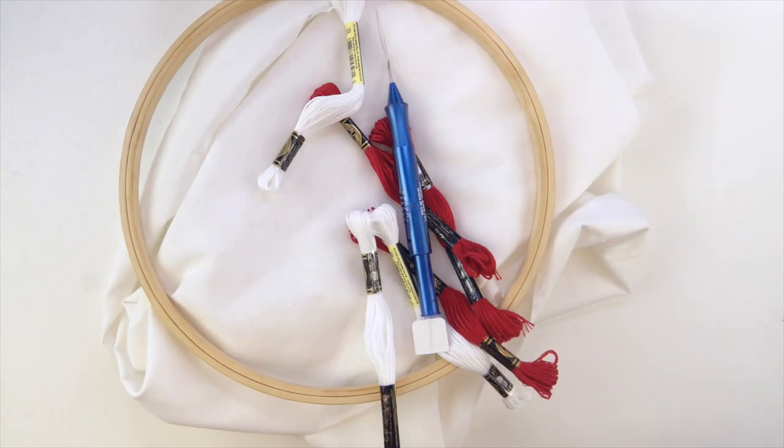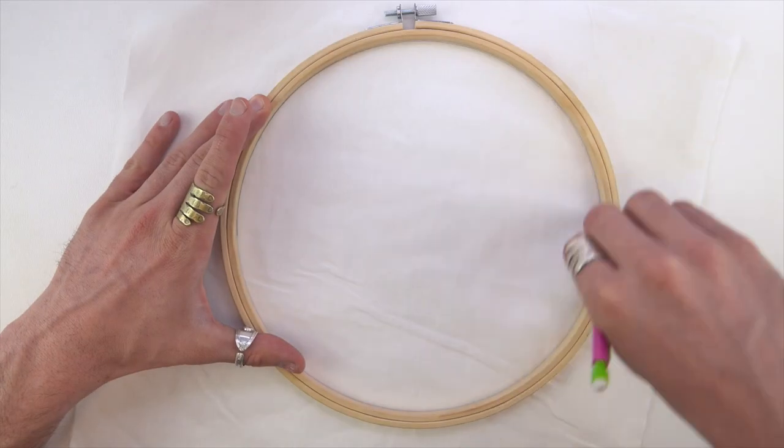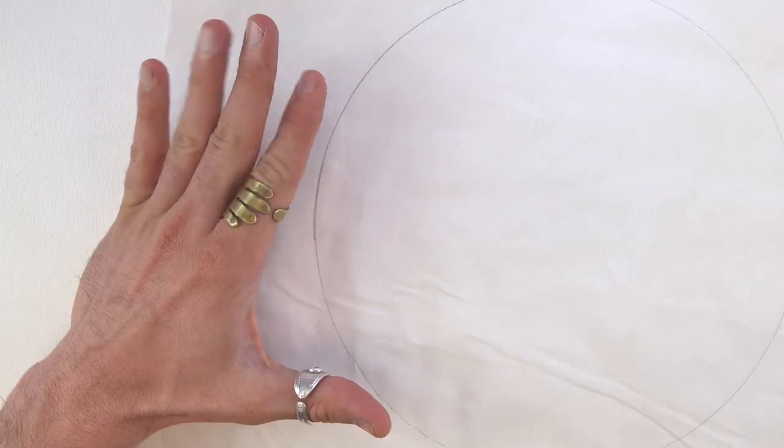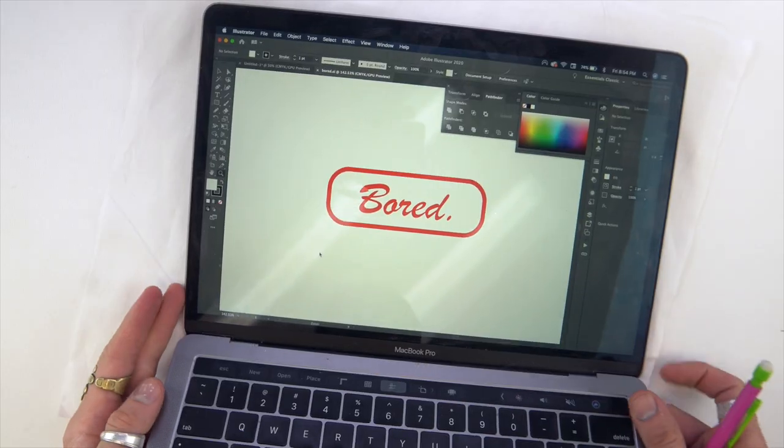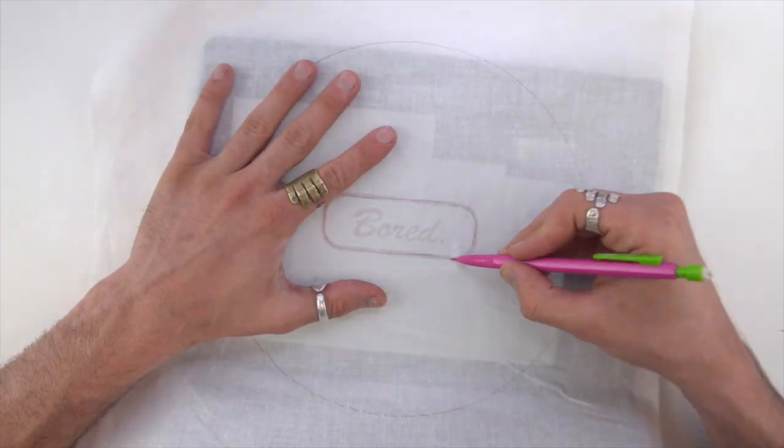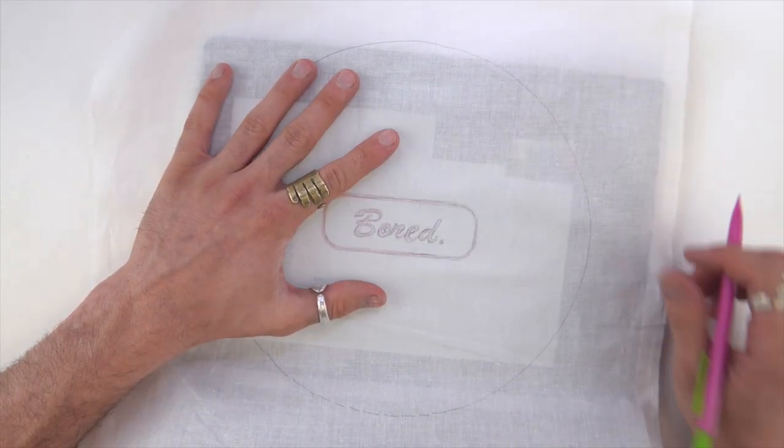This video is sponsored by Skillshare. So here's all the stuff I'm going to use. The first thing I'm gonna do is trace out the image onto my fabric. So I traced my hoop and then I actually just grabbed my laptop with the image to the size I wanted it and I put it up underneath the fabric and just traced along it like it was a lightboard.